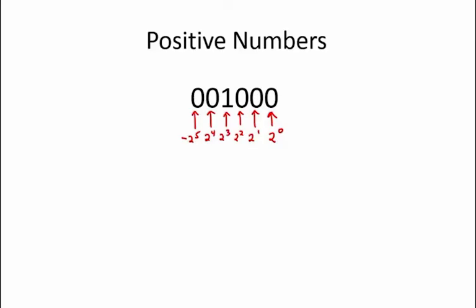Having the most significant bit represent a negative power of 2 rather than a positive power allows us to express both positive and negative numbers with our notation. If your number has a 0 in a certain position, then the power of 2 associated with that position is not present in your number. If the number has a 1, then that tells us that the corresponding power of 2 makes a part of the number's value.